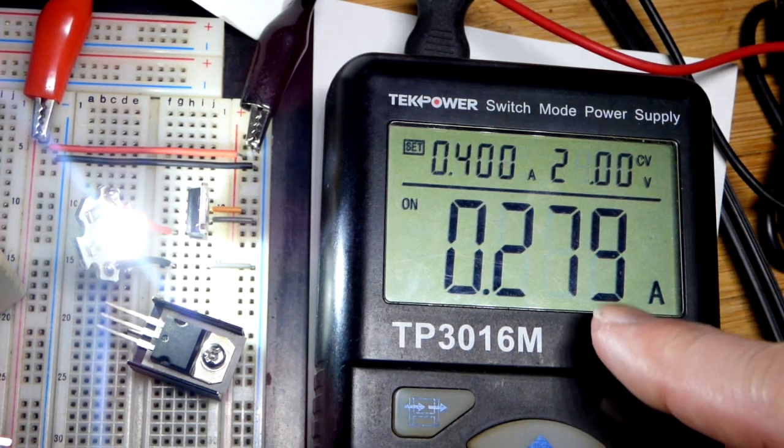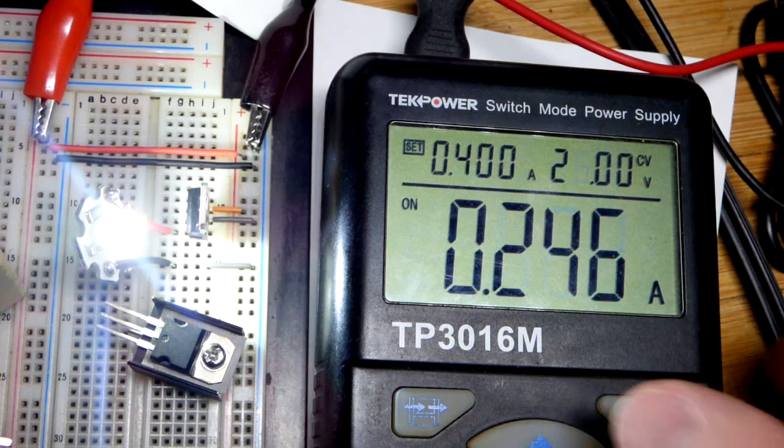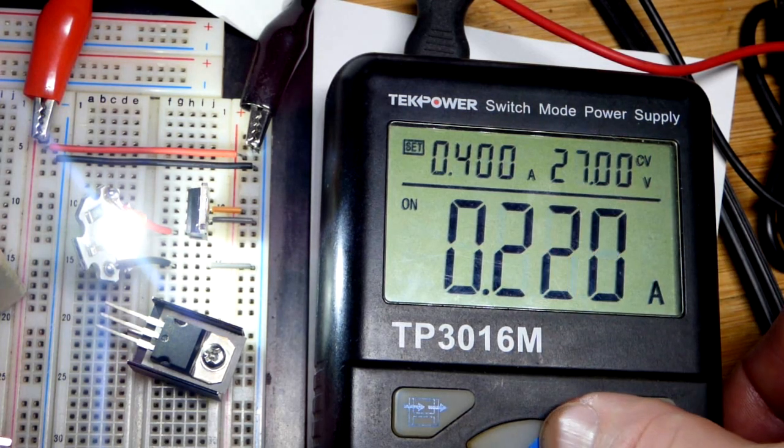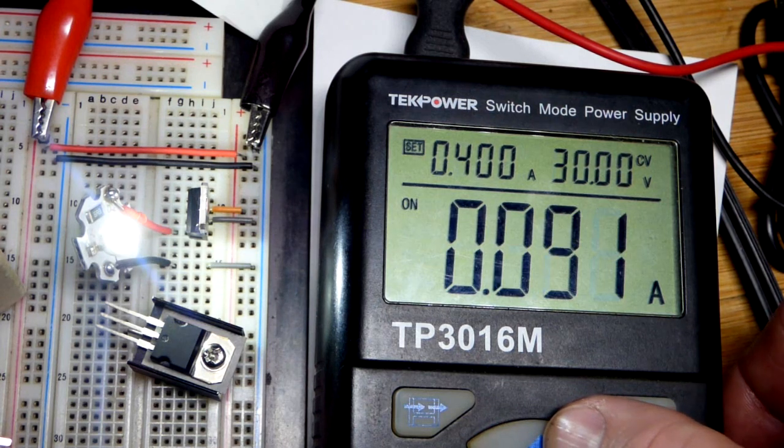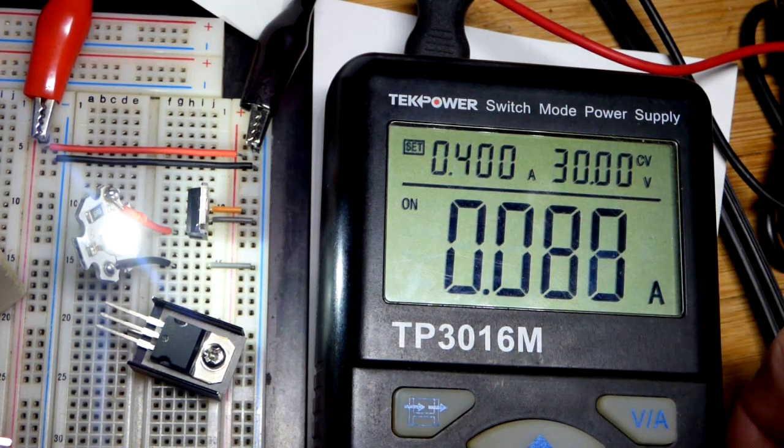When you see the current starting to go down, that's when it's starting to overheat. It seems to really kick in at 25 volts as we work our way up there. You can see the LED getting dimmer—there's less current.